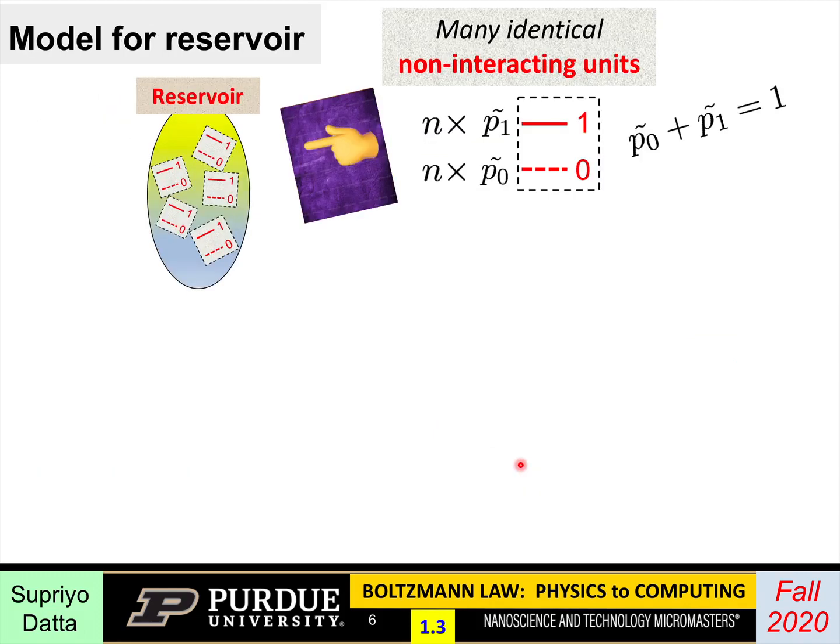So the model we introduce is, think of a reservoir that's also composed of these little two-level systems, zero and one. And there are many of them, that's the small n, and they're all non-interacting. The basic rule for the Boltzmann law that we introduced for the system applies to any complex system. It could be interacting, whatever it could be. But right now what we are introducing is a model for the reservoir, where we assume that it's many identical non-interacting units.